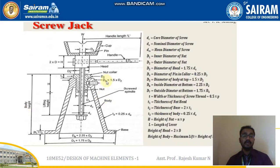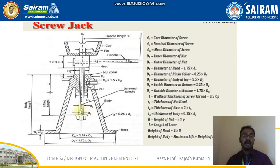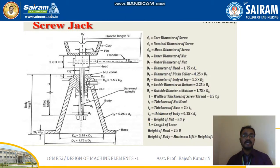D7 is the outside diameter of the bottom, equal to 1.75 × D6. Small t is the width or thickness of the screw thread, which is 0.5 times the pitch. T1 is the thickness of the nut head. T2 is the thickness of the base, equal to 2 × T1. T3 is the thickness of the body, equal to 0.25 × DO. H is the height of the nut, equal to N × P. L is the length of the lever. The height of the head equals 2 × T, and the height of the body equals maximum lift plus height of nut plus 100 mm clearance (which may be 75, 100, 125, or 150 mm depending on machine size).